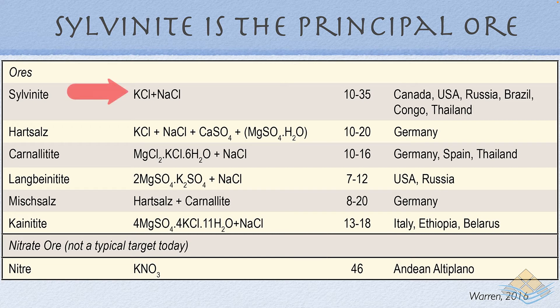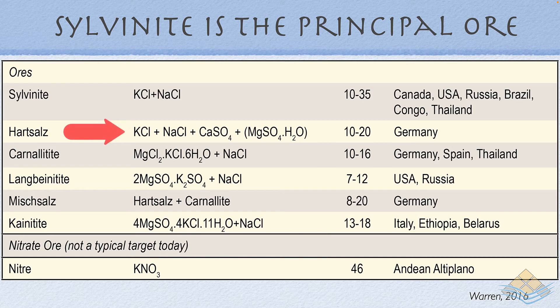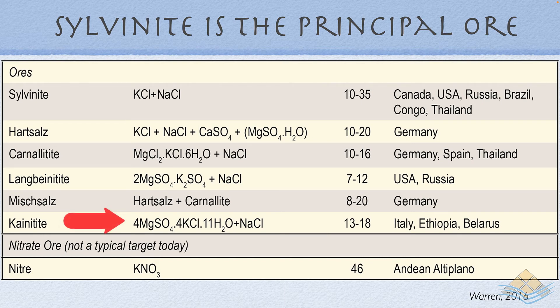Schoenite and glaserite are targeted salts in the manufacture of sulfate of potash at the Great Salt Lake, with K2O contents of 42 and 23 percent respectively, and then polyhalite at 15.6 percent K2O equivalent. Most ore salts are combinations of salts, so we use the term sylvinite - a combination of sylvite and halite - which has a K2O range of between 10 and 35 percent. Then there are other combination salts: hartsalz from the German potash mines is a combination of sylvite, halite, and anhydrite; carnallitite is a combination of sodium chloride and carnalite; langbeinitite is a combination of langbeinite and sodium chloride; and there are the mixed salts which are combinations of hartsalz plus carnalite. The type occurrences for these various mineralogical forms are listed on the right-hand side.